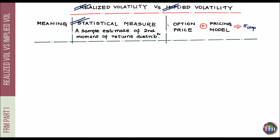Now comes implied volatility. Here, we have an option traded on the underlying asset — a call or a put — with a market price attached to it. Assuming we have an option pricing model, such as the Black-Scholes model, we play around with the volatility input going into the model and stop at the point when the model price matches the market price. That particular volatility input is called the implied volatility, or sigma implied.